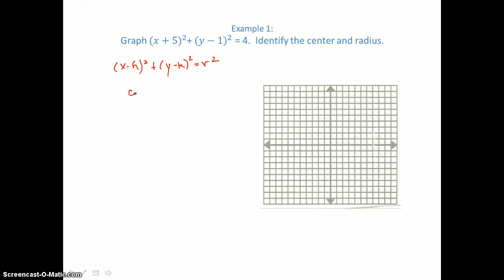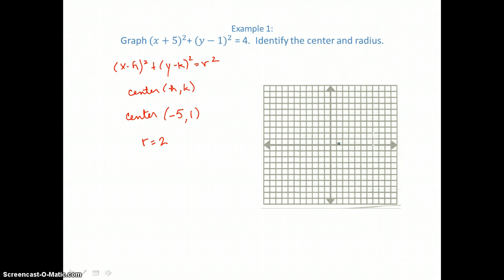Identifying the center, which is (h, k), we have a center of (−5, 1). Negative 5 is our h value — it's subtracted from x. And 1 is our k value — it's subtracted from y. Our radius is the square root of 4, or 2. When we graph this circle, we plot the center at (−5, 1), then use the radius to find 4 points: up 2, down 2, left 2, and right 2 units, and draw the circle through those points.